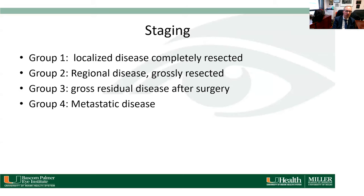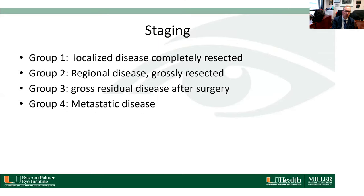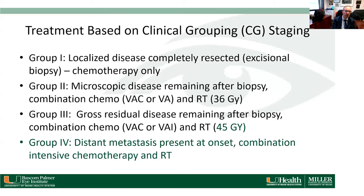Staging of rhabdomyosarcoma: Group 1 is localized disease completely resected. Group 2 is regional disease grossly resected — an orbital mass where the majority was removed but not all. Group 3 is gross residual disease after surgery — many orbital rhabdomyosarcoma patients are Group 3. Group 4 are patients with metastatic disease.